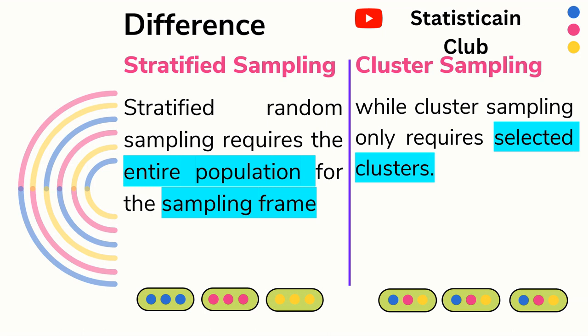Stratified random sampling requires the entire population as a sampling frame, because it uses systematic and random sampling. But cluster sampling requires only the selected clusters — we choose one or two clusters according to our situation and then use the entire population of those clusters as the sample.